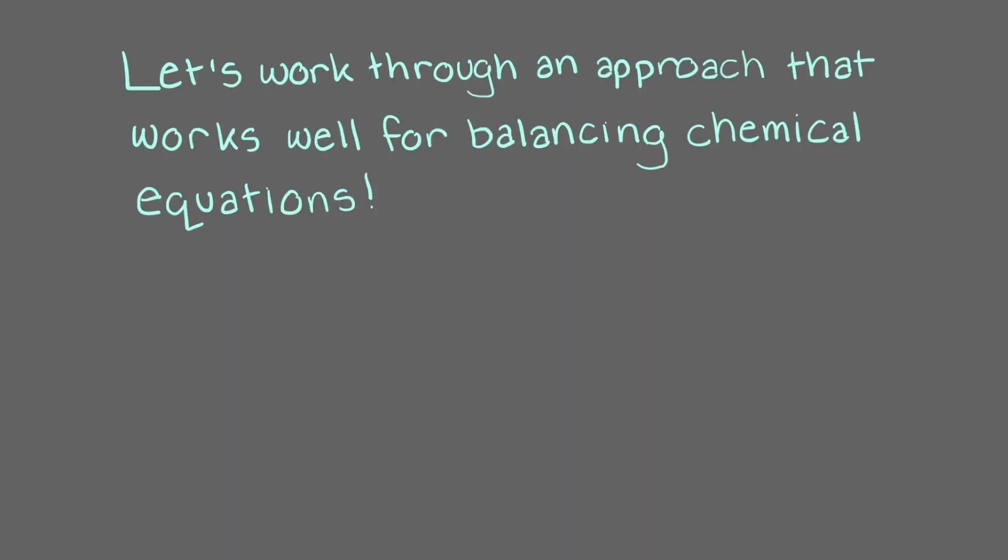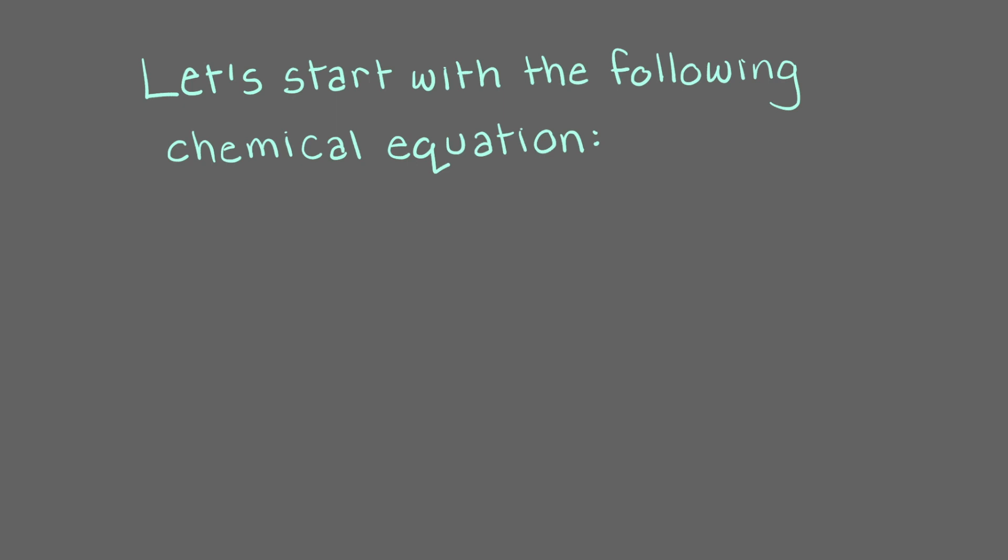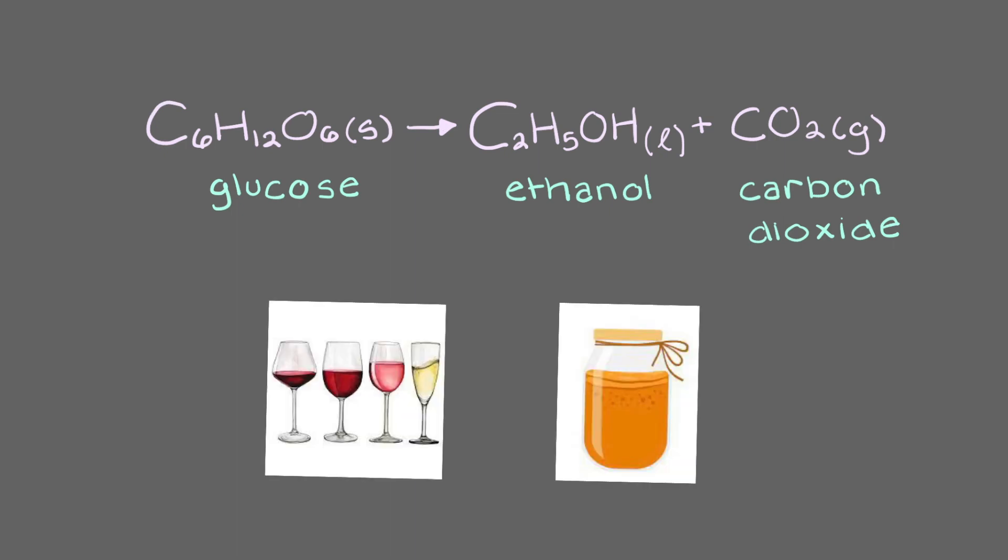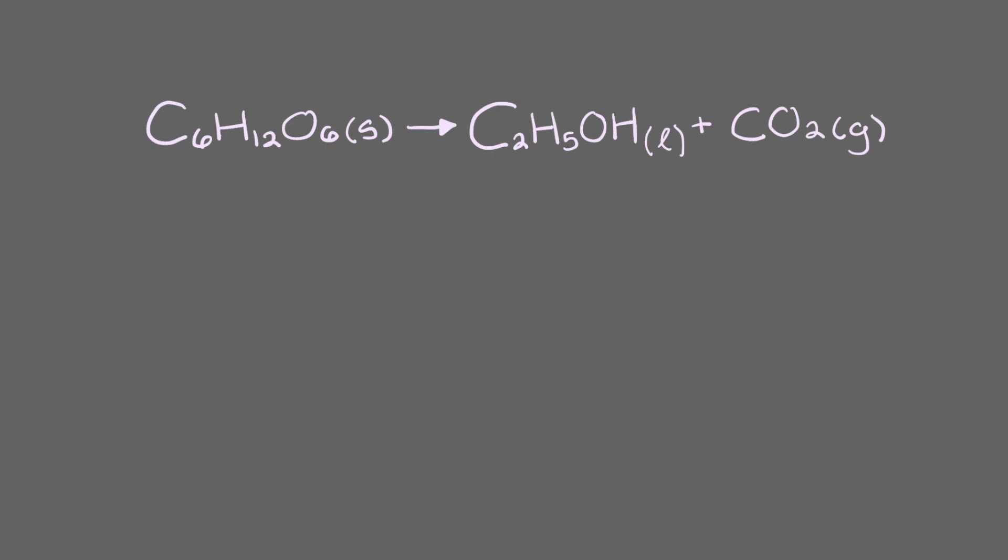Let's work through an approach that works well for balancing chemical equations. Let's start with the following chemical equation. This equation represents the fermentation of glucose to ethanol and carbon dioxide, which is a process that occurs when making fermented beverages like wine and kombucha. Now let's balance this equation. First, let's get rid of the states of matter while we work. They're just going to distract us. We will add them back at the end once the equation is balanced.